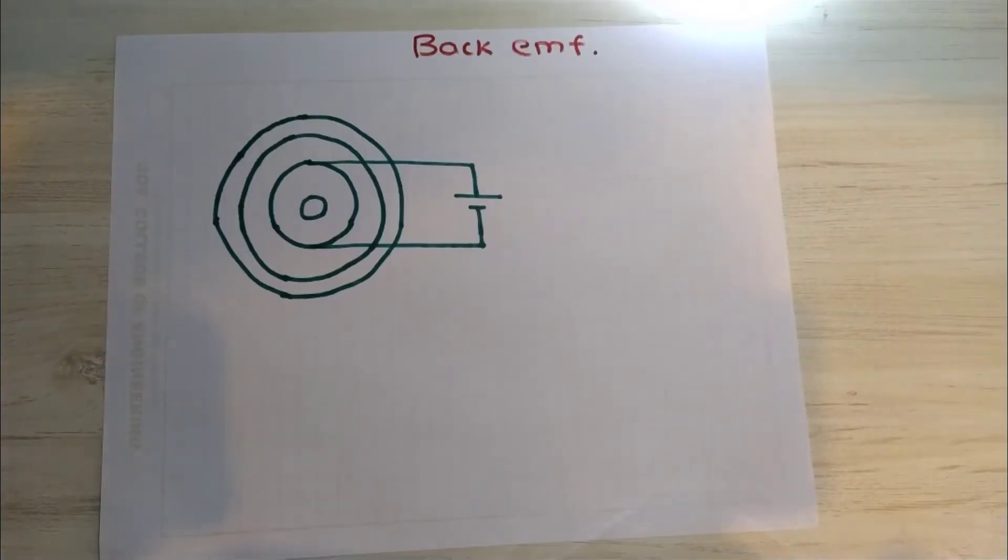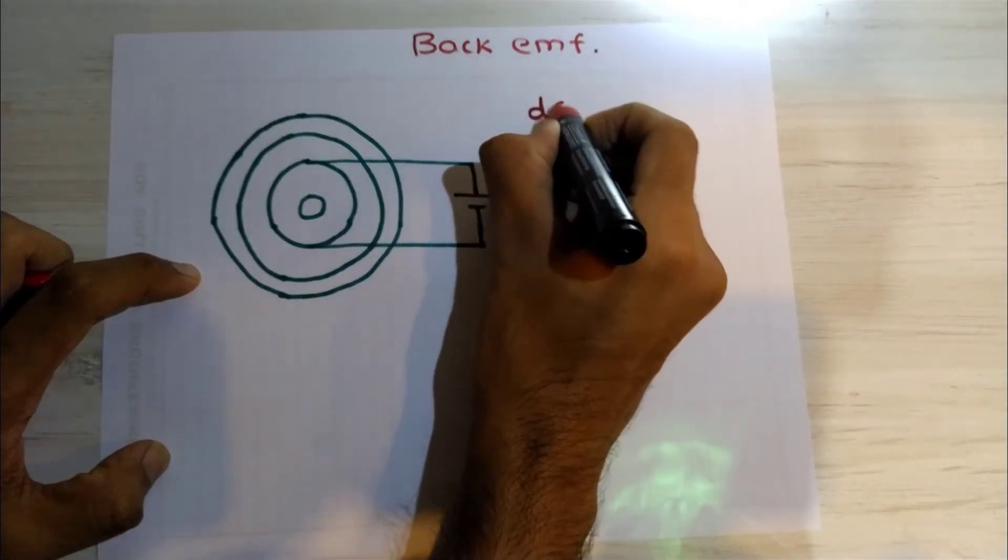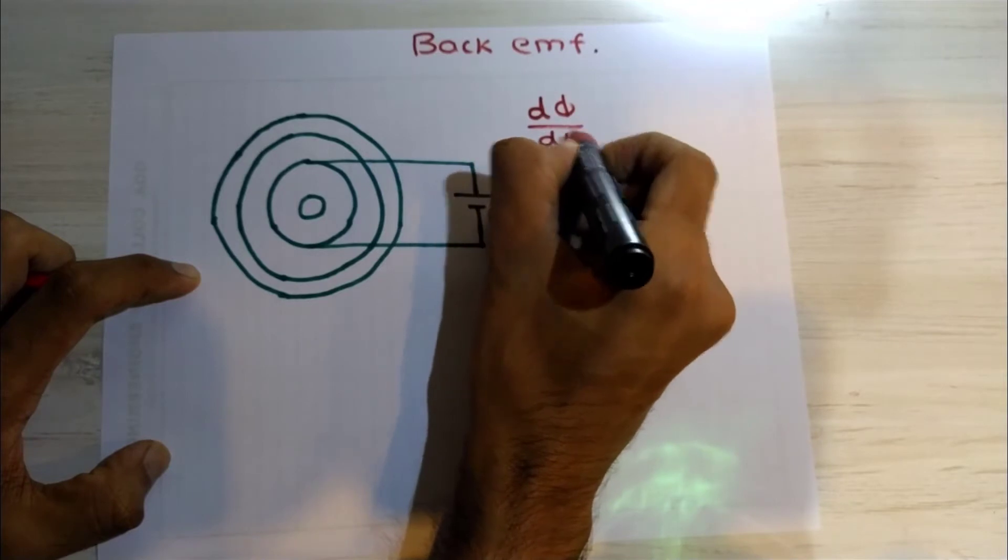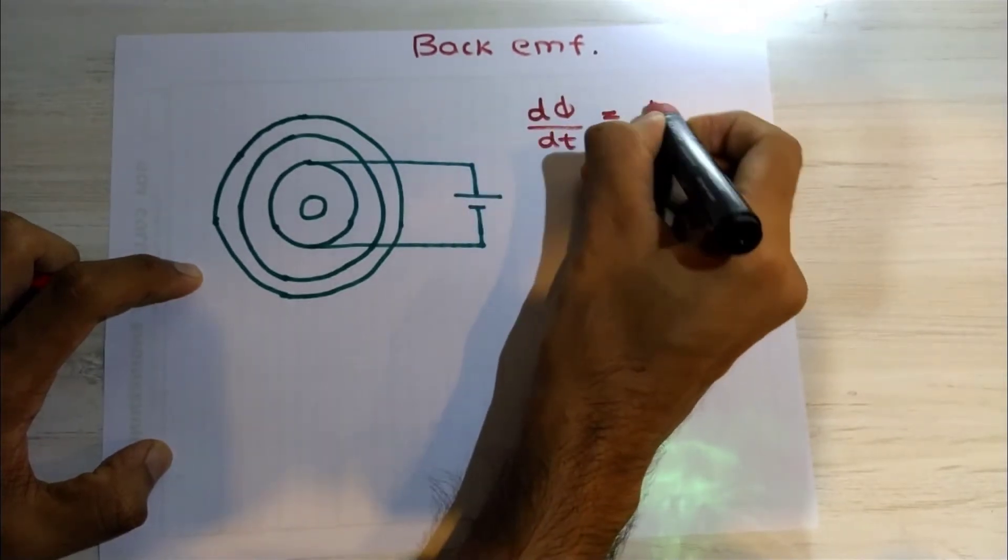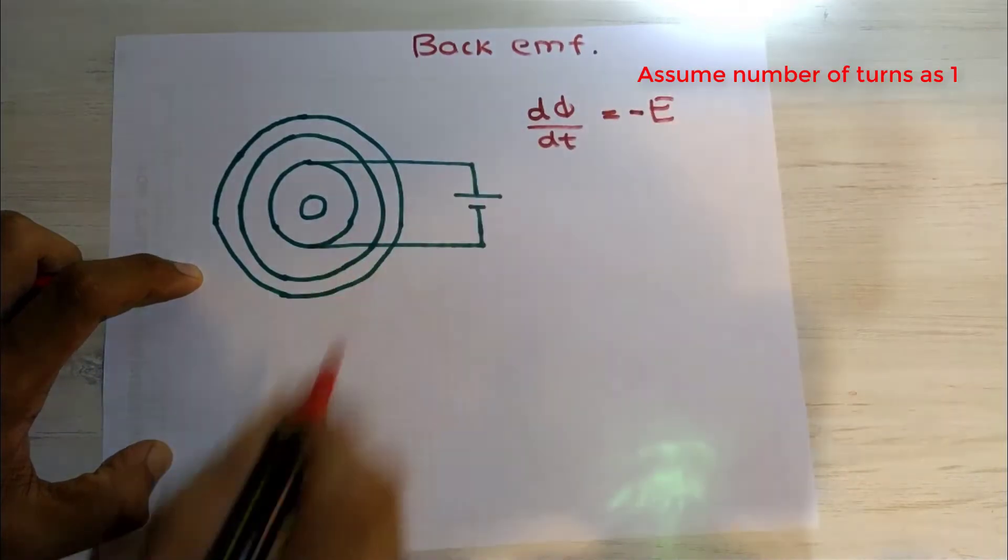Before we start with back EMF, I want to remind you of Faraday's law, which says that change in flux produces an EMF which opposes its cause, therefore the negative sign.